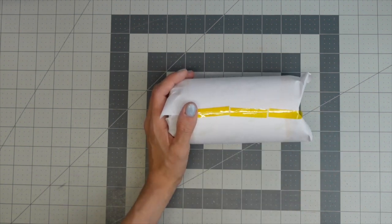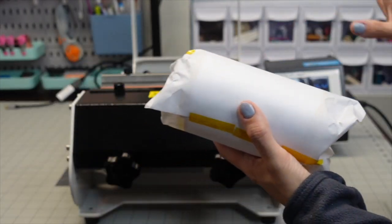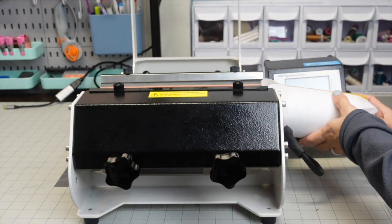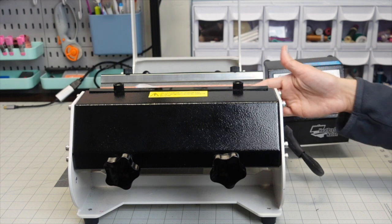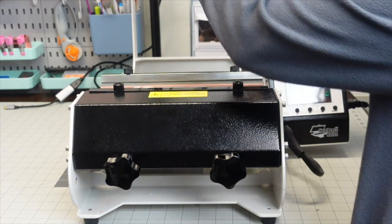I have a mug press that has an attachment for a tumbler. Now we're ready to put our tumbler inside of our heat press. We're going to slide it in and we're pressing for 120 seconds.